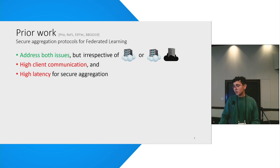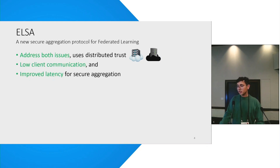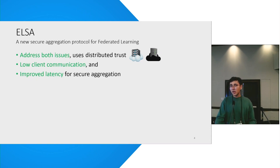Since I'm standing here presenting this work, we solved the problem. We propose a new secure aggregation protocol which uses distributed trust at the servers. We address both the issues with federated learning — the privacy issue and the issue of malformed gradients — while being concretely efficient. In particular, we have low client communication and we also improve latency over prior work.